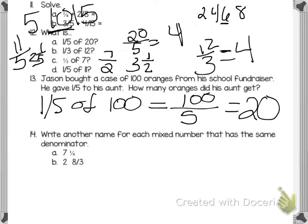Number 14 says write another name for each mixed number that has the same denominator. So you have 7 and 1 fourth. I'm going to just take a hole away. So I know that's 4 over 4. So then I have 6 and 4 plus 1 is 5. So another mixed number might be 6 and 5 fourths. For B, if I take 3 away from my denominator, I add a hole and then I have 5 thirds left. And that's it. Good luck.